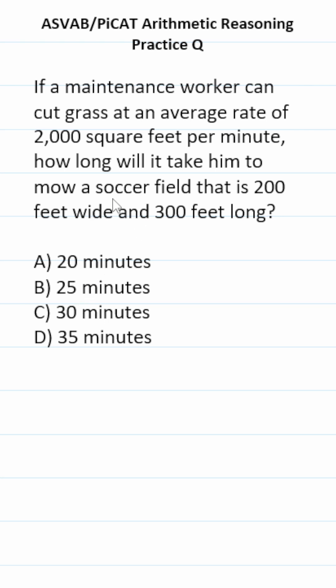So first we have to find the area of the soccer field. Soccer fields are rectangles, so its area is simply going to be length times width. In this case, we know both of these values. We know the soccer field is 300 feet long and 200 feet wide.